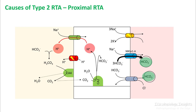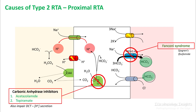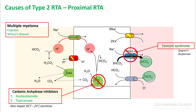What are the causes of type 2 RTA? A problem with your sodium bicarb exchanger in the proximal convoluted tubule results in Fanconi syndrome. Medications like ifosfamide can sometimes lead to channel dysfunction. However, the commonest thing you'll encounter clinically will be carbonic anhydrase inhibitors such as acetazolamide and topiramate. Note that carbonic anhydrase is also involved in the distal convoluted tubule for hydrogen secretion, so that will be affected as well. Patients with multiple myeloma and Wilson's disease can have similar problems. In multiple myeloma, light chains are filtered and reabsorbed by the proximal convoluted tubule, causing lysosomal cellular dysfunction and impaired bicarb absorption.